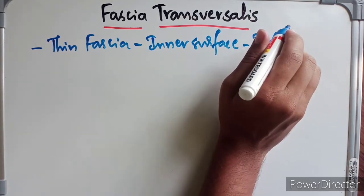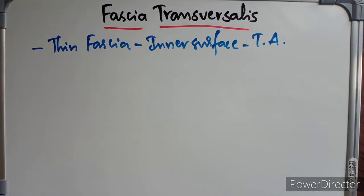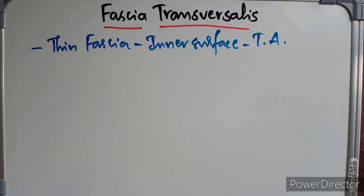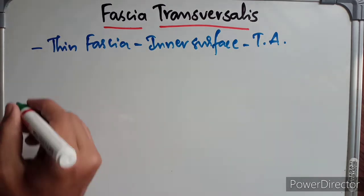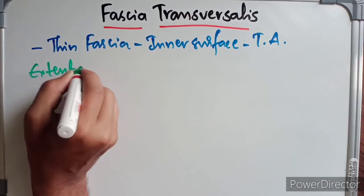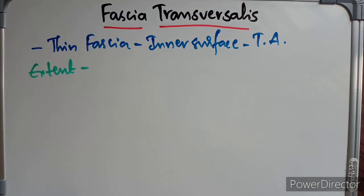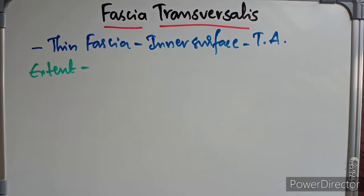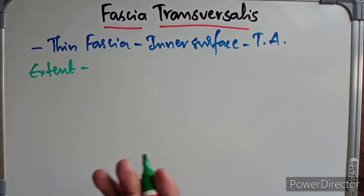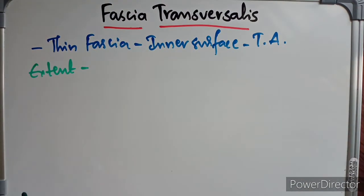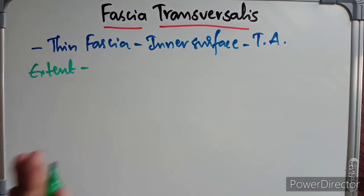What is its extent? Superiorly it is continuous with the similar layer lining the inferior aspect of the diaphragm, which is the diaphragmatic fascia. The diaphragmatic fascia continues as the fascia transversalis. Anteriorly it extends to the linea alba, and posteriorly it becomes continuous with the anterior layer of the thoracolumbar fascia.